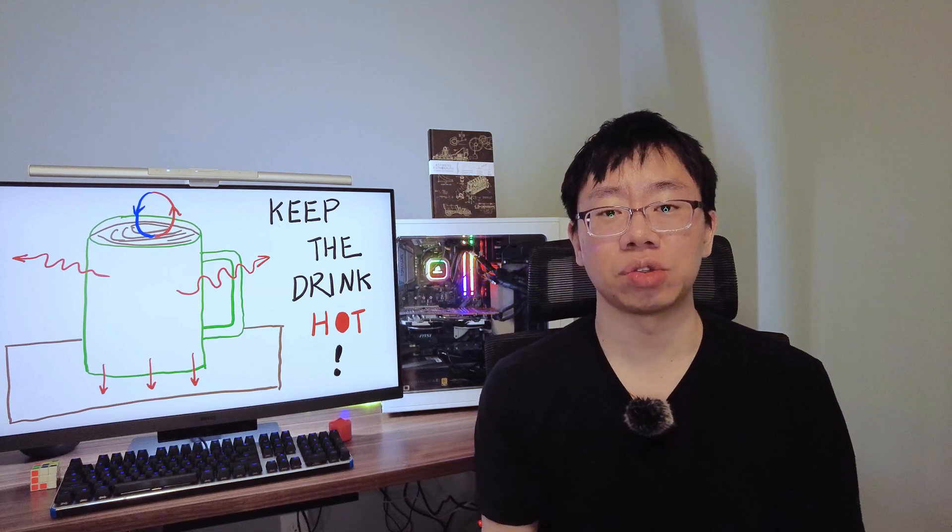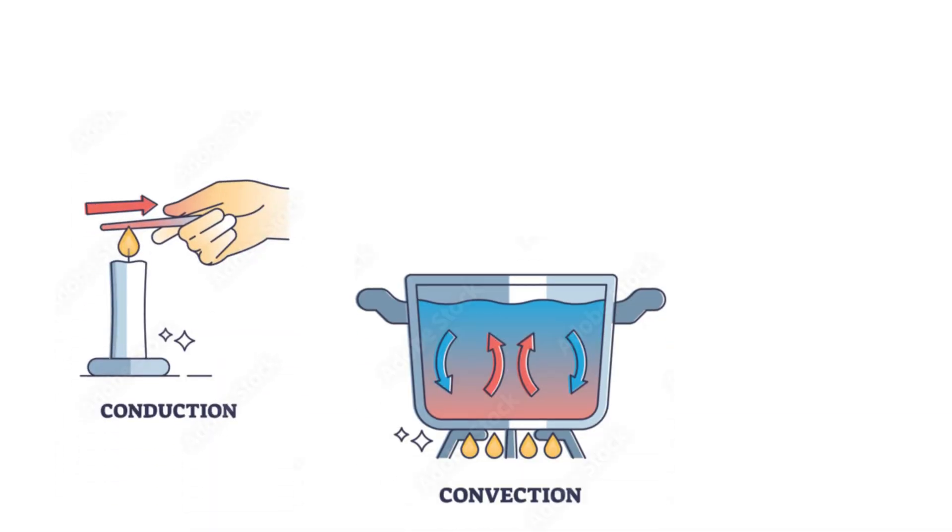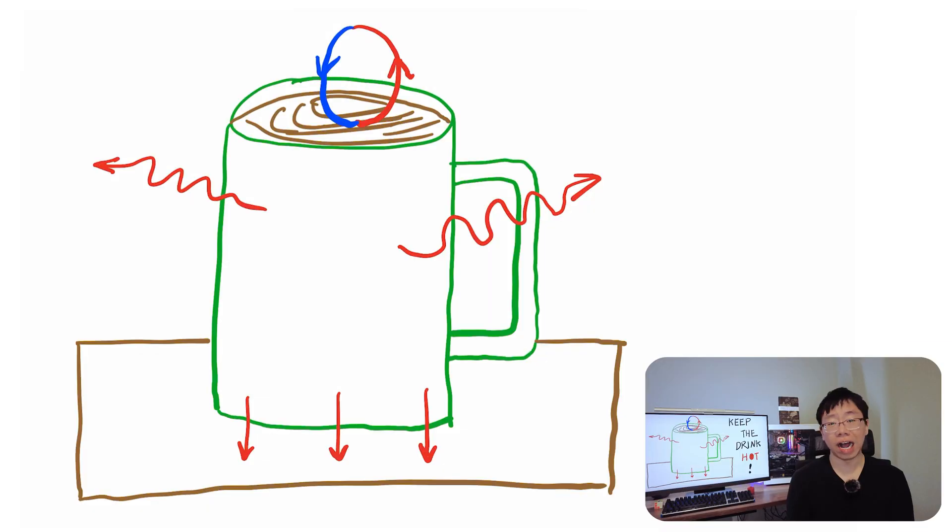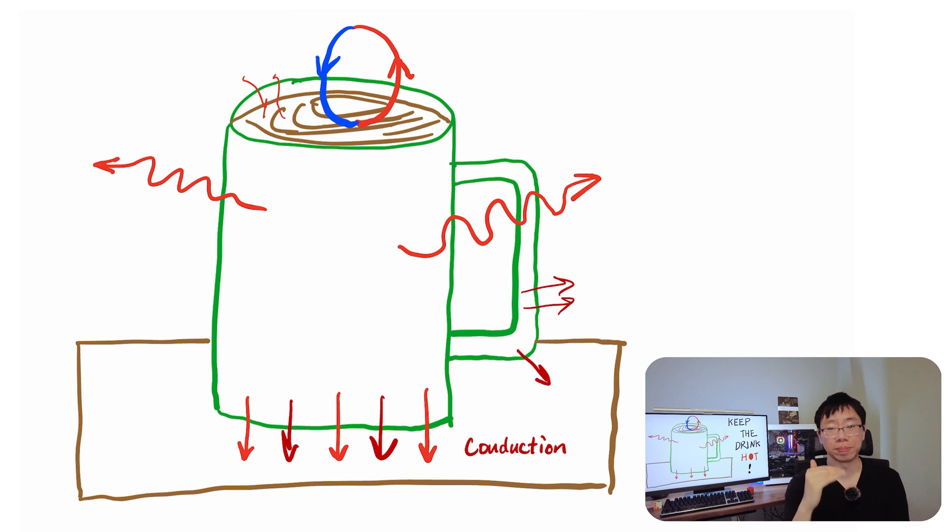We know from heat transfer class that heat can transfer via three modes: conduction, convection, and/or radiation. For a hot beverage, heat transfers from the fluid through the walls of the mug via conduction to the outer surface and into the surroundings. Heat is also lost from the surface of the beverage to the surrounding air if it's exposed to the air. Warm air above the beverage rises and is replaced by the denser, cooler air.